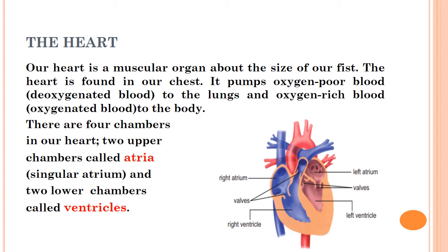Where is the heart located? The heart is found between the lungs of our body, almost in the middle of our chest, slightly towards the left side. What does it do? It pumps oxygen-poor blood — also known as deoxygenated blood — to the lungs, and oxygen-rich blood to the body. So the heart receives two types of blood: deoxygenated blood and oxygenated blood. The heart sends deoxygenated blood towards the lungs and oxygenated blood towards the body.